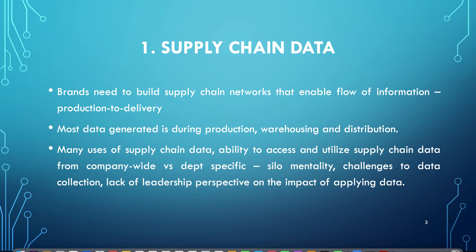Overall, companies and brands need to speed up the process; they need to build supply chain networks, and in building these networks they need to enable flow of information — information relating to production, starting from production until delivery of the product to the final consumer. Most of the data generated happens during production, during warehousing where products are stored, and then during the distribution process.